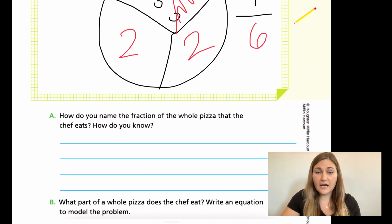And then I just chose my one piece that the chef ate out of my six total pieces. However, you want to describe this in writing is totally fine. There are multiple different answers on what A can be, and I'm not going to take the time to write it down, but anything, as long as you're mentioning your one third and your one half and how that turned into sixth pieces, you're on the right track.